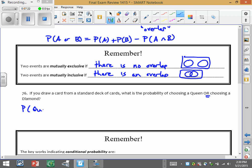So we want a queen or a diamond. So what that means, there are 4 queens. Or means add. So we will add 13 diamonds. But because there's an overlap, we have to subtract it out. Remember to subtract the overlap.